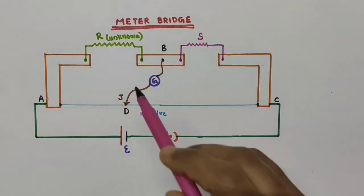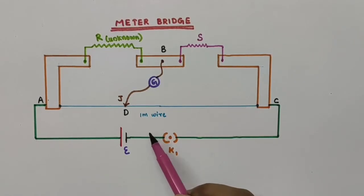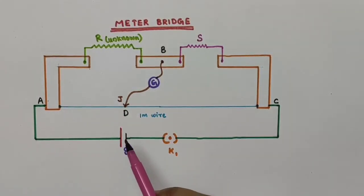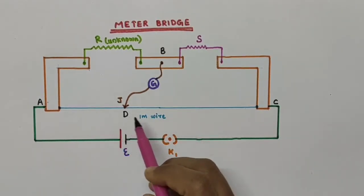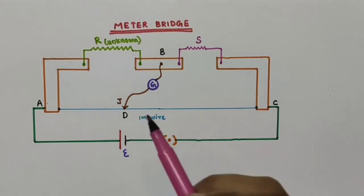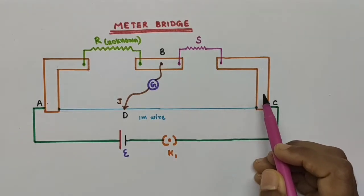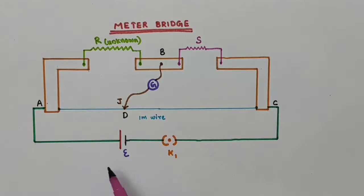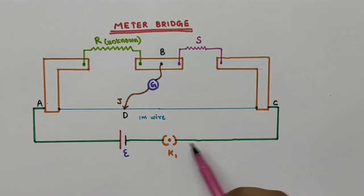Here we have a meter bridge. This is the practical way of using the Wheatstone principle. This meter bridge consists of a wire — imagine this blue colored one as the wire of length 1 meter and of uniform cross sectional area. The wire is stretched and clamped between two thick metallic strips bent at right angles. The end points where the wire is clamped are connected to a cell through a key.